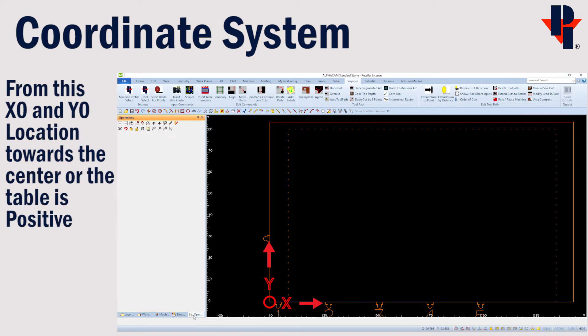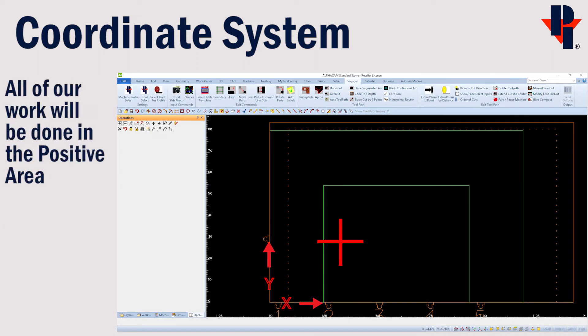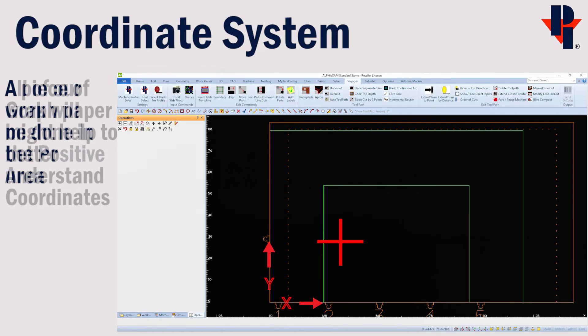From the zero location towards the middle of the table is a positive direction. We will be using the positive quadrant or the positive side of the coordinates so that the parts will be on our machine's table.